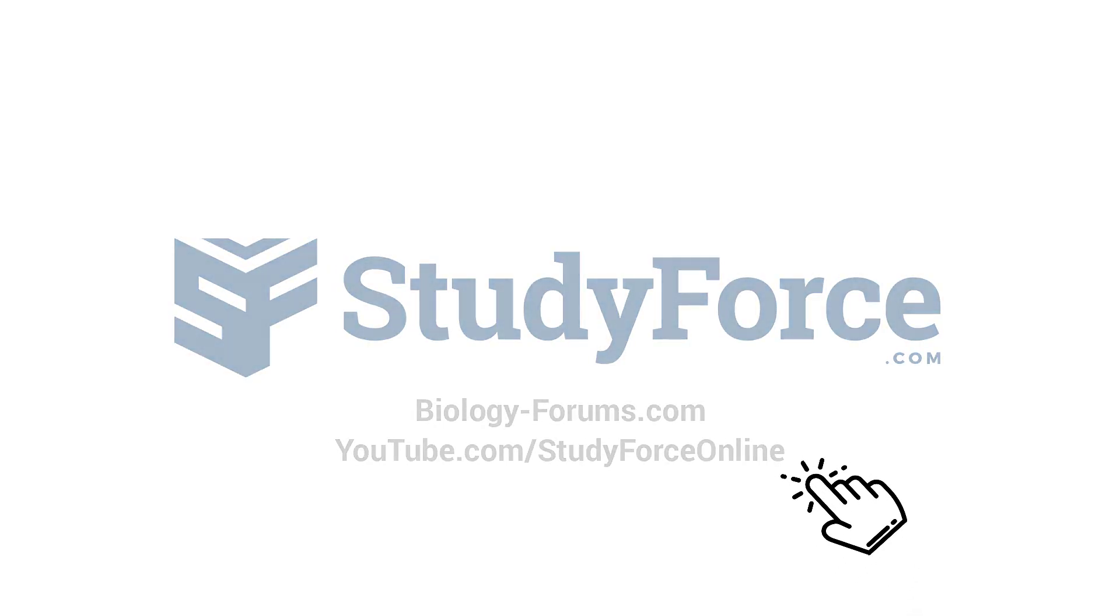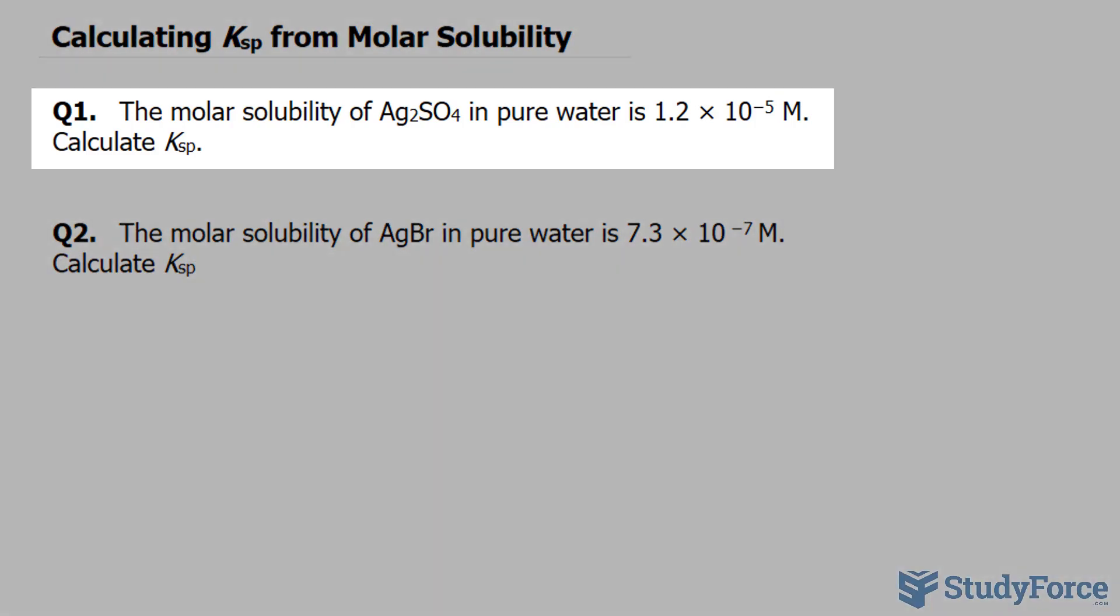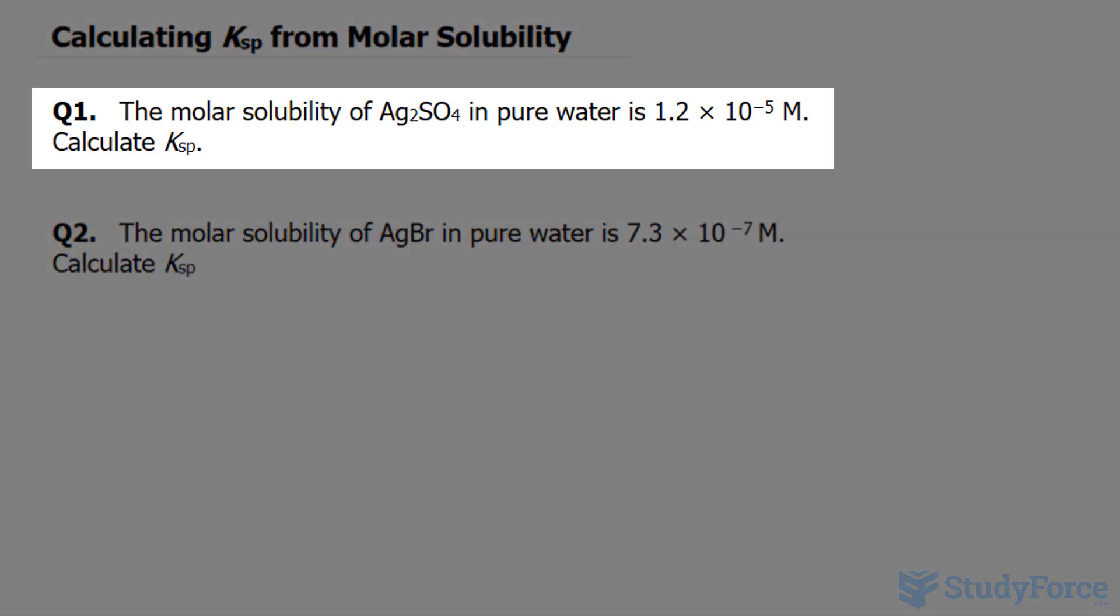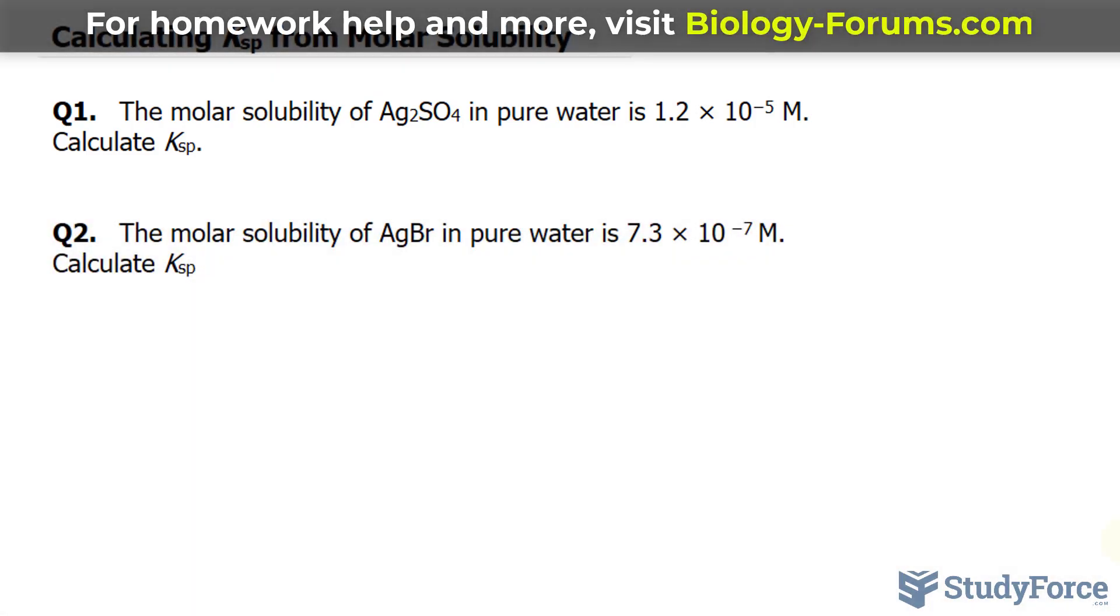In this lesson, I'll quickly show you how to calculate Ksp from molar solubility. The question reads, the molar solubility of Ag2SO4 in pure water is 1.2 times 10 to the power of negative 5 molar. We're expected to calculate the Ksp.